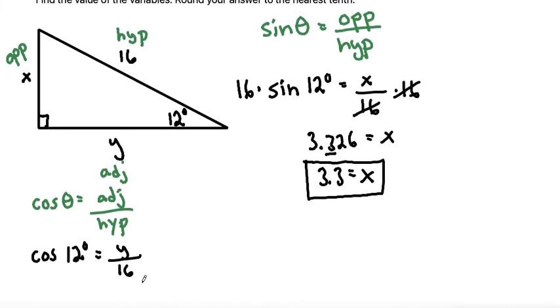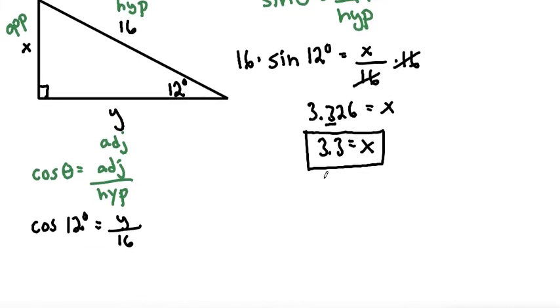Let me give myself a little more room here to finish. And again, the y is on top, so all we need to do is multiply both sides by 16 to cancel out this 16 in the denominator. And it gives us y is equal to, grabbing our calculator again, 16 times the cosine of 12.